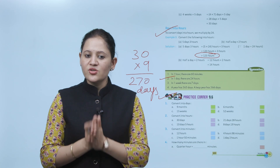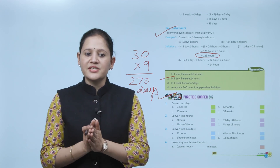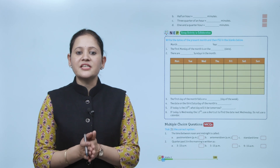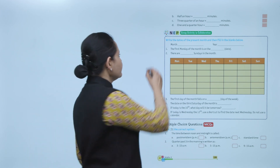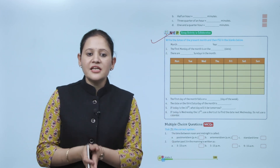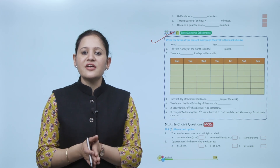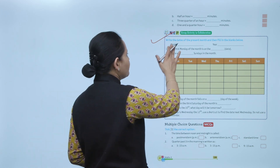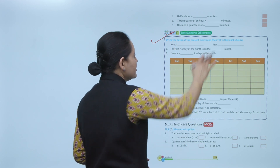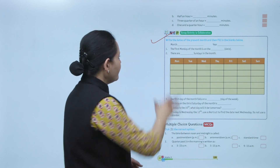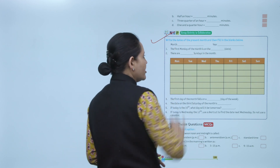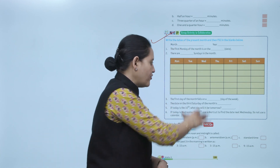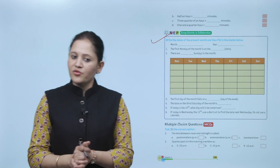Next is Group Activity in Collaboration. Write the date of the present month and fill in the blanks. Write the name of the month, the year, and the first Monday of the month. Fill in the details and answer the following questions. This activity you have to do by yourself.